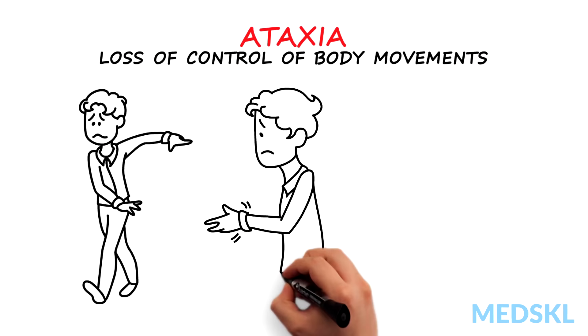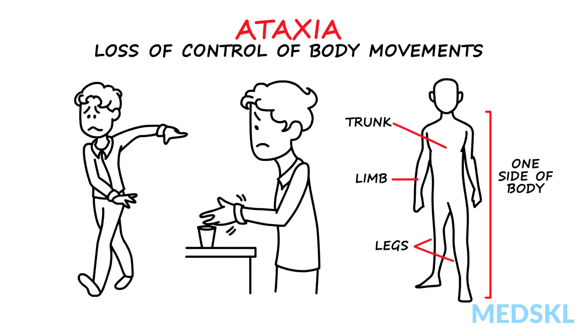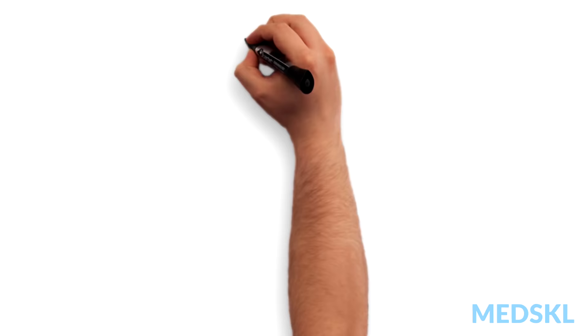Ataxia is the word we use to describe the loss of control of body movements. It may affect our trunk, one side of the body, both legs or one limb.